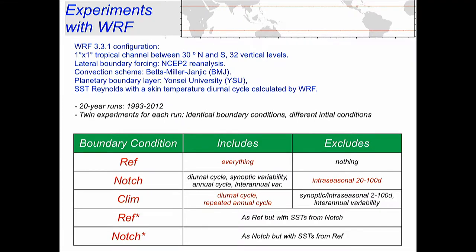What do we do with these boundary conditions? We have a reference run where the boundary includes everything — we just put the NCEP2 reanalysis on the boundaries. Then there's what we call a notch run: on the boundary we put the diurnal cycle, synoptic scales, annual cycle, and interannual variability — everything except the MJO band of frequencies, which we remove. And then we have a climatology run where we put everything except a repeated annual cycle — so no interannual, low-frequency, or synoptic variability.